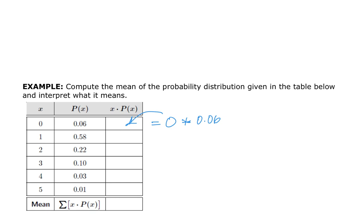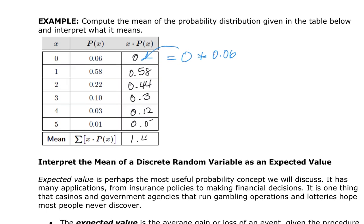Since I already did this, I'm going to write these in. The first one is 0, the next one was 0.58, the next one was 0.44, then 0.3, 0.12, and 0.05. When I sum this all up, I got 1.49.